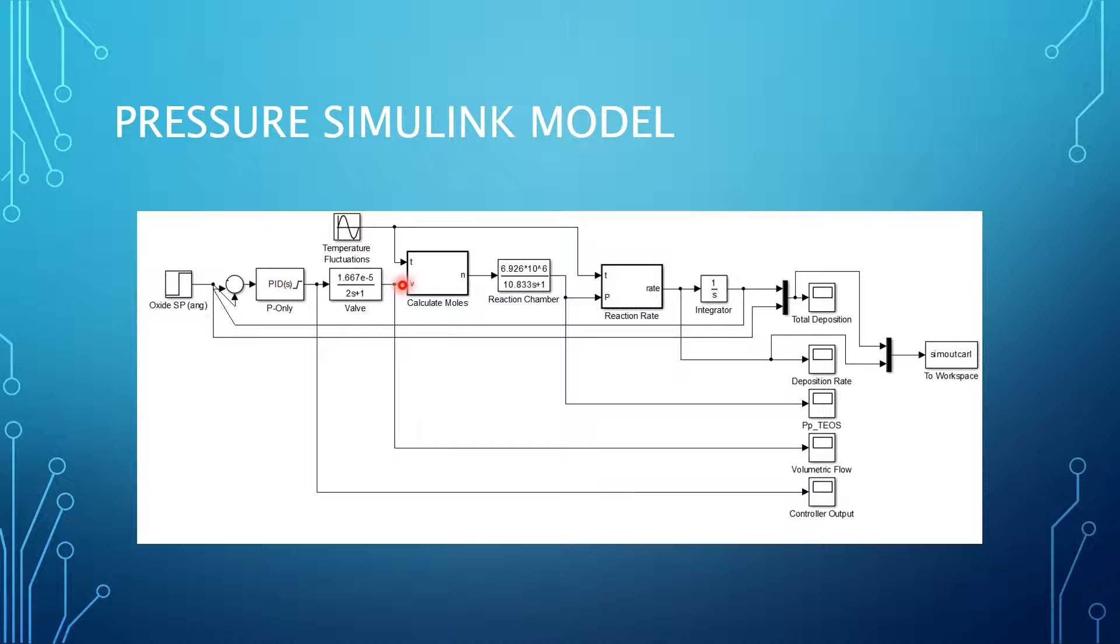And it takes the volumetric flow rate also along with the temperature fluctuations to calculate how many moles of reactant are flowing into the system. Then with a fairly complicated first principles model involving the reaction rate and the diffusion and mixing dynamics along with material balances, we found this transfer function, which gives us the partial pressure with time.